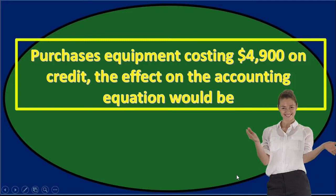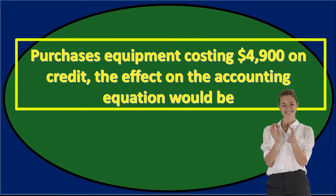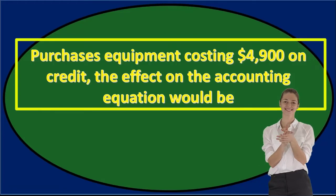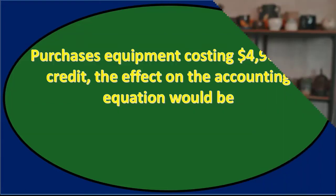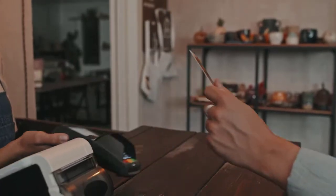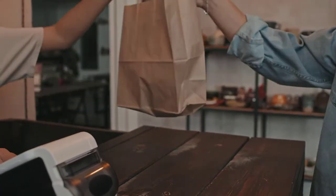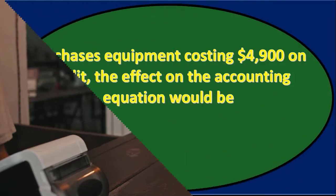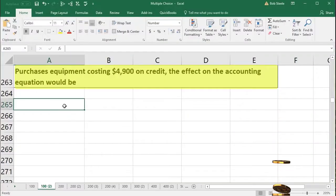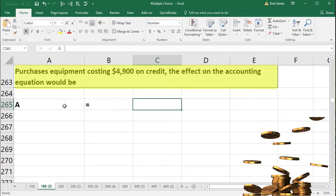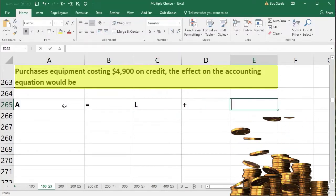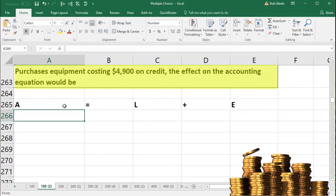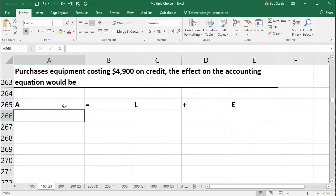Next problem: a company purchases equipment costing $4,900 on credit. The effect on the accounting equation would be what? We're looking for the transaction recorded in terms of the accounting equation — assets equal liabilities plus equity. I'd write down the accounting equation and record the transaction with regard to it.